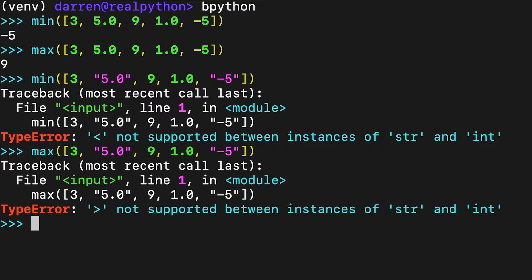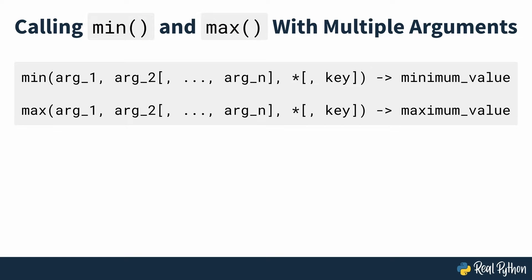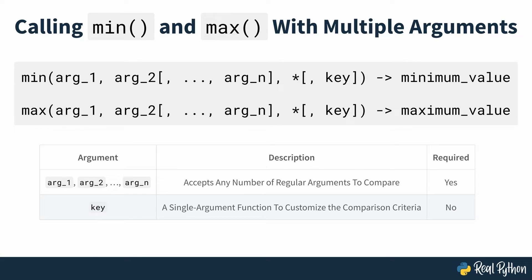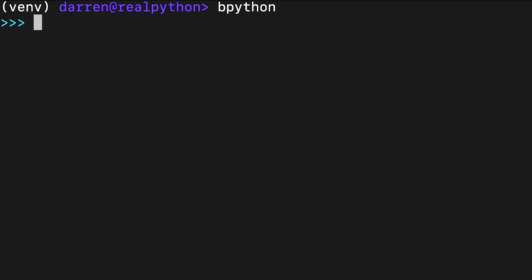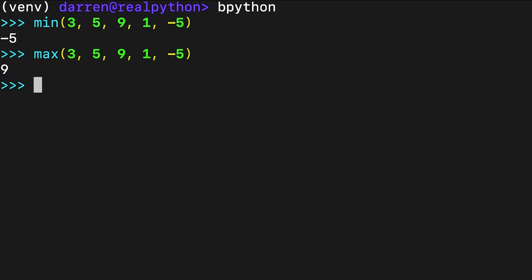The second signature of min and max allows you to call them with any number of arguments, providing that you use at least two. Again, these functions return the minimum and maximum values respectively. This variation of min or max doesn't have a default argument — you must provide at least two arguments in the call for the function to work correctly. A default value isn't required because you'll always have at least two values to compare in order to find the minimum or maximum. You can call min or max with two or more regular arguments and get the minimum or maximum value in the input data, with the only condition being that the arguments must be comparable.